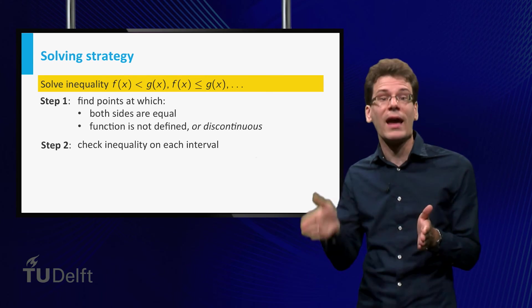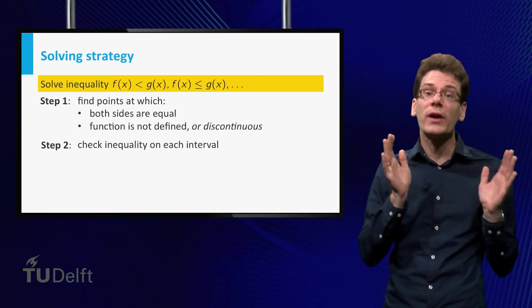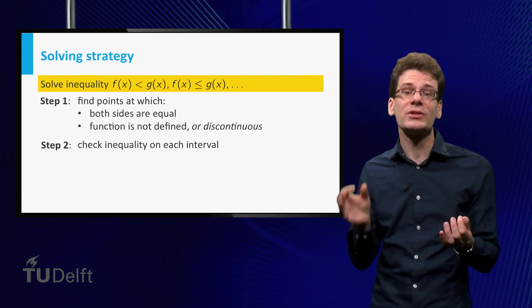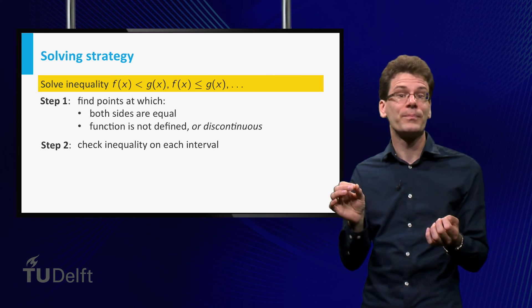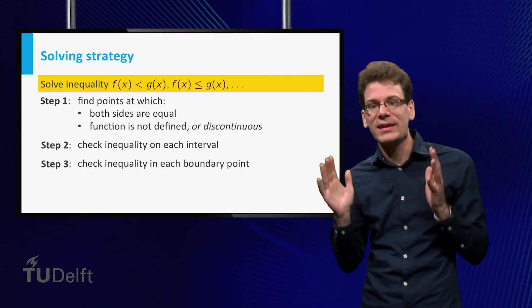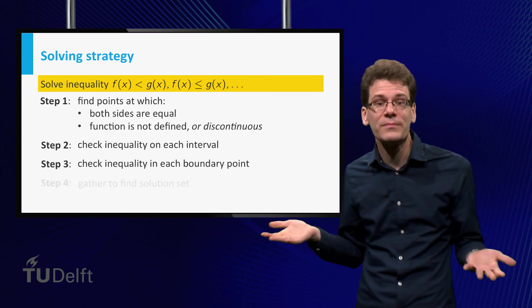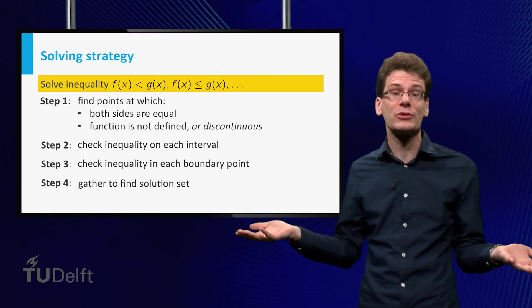These points divide the real line into intervals. Look at each interval whether the inequality holds. You can check this at one point in the interval. Finally, check at each boundary point whether the inequality holds. The solution is then the union of intervals on which the inequality holds.